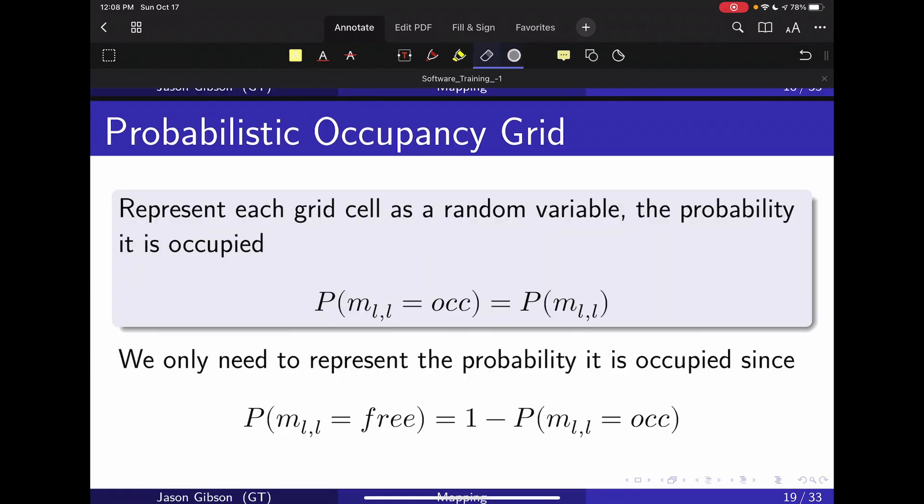One way we can do occupancy grids is we can lean back on our ideas of probability, and we can say that each grid cell represents a random variable which is the probability that it is occupied. So this is a binary random variable—the grid cell is either occupied or not occupied—therefore we can use a fun little trick from probability that says the probability that it is free is just one minus the probability that it is occupied, because since these are only two events in the sample space, they must sum to one.